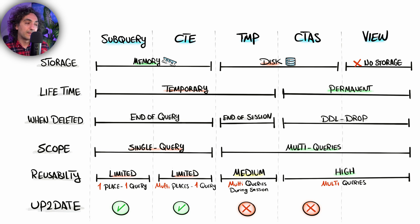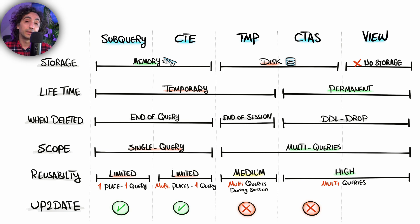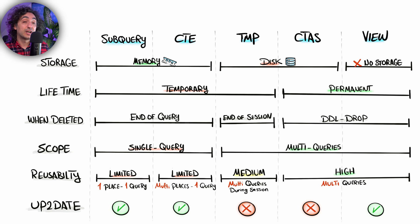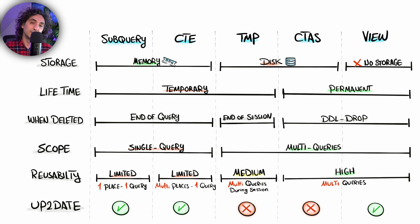With temporary tables and CTAS there is no guarantee the data is up to date — if you want fresh data you have to drop the table and recreate it from the query. Views, on the other hand, are amazing and always up to date because views do not store any data. Each time you query a view, the database goes to the original table and fetches fresh data, so your data is always current.